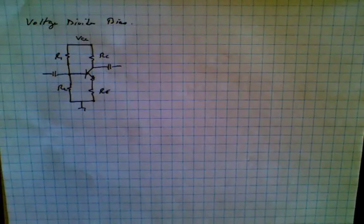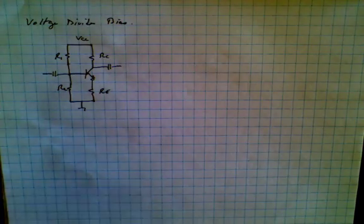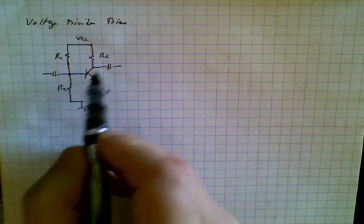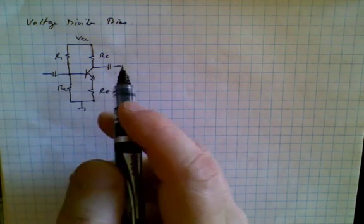Perhaps the most common form of bias used in transistor circuits is voltage divider bias. So here we see a simple example. An AC signal is coupled in and coupled out. So nothing either after or before the circuit affects any of the DC voltages.